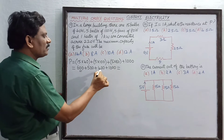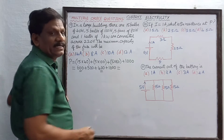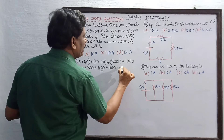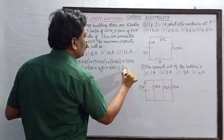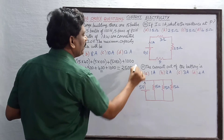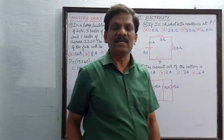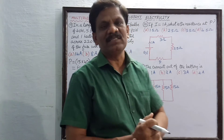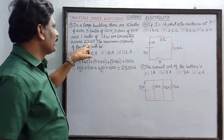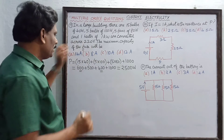Adding these up: 600 plus 400 is 1000, plus 1000 is 2000, plus 500 is 2500 watts — that is the total power in the parallel combination. The potential difference is 220 volts.